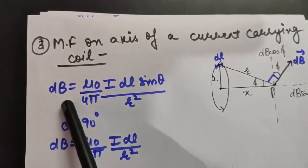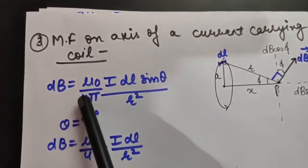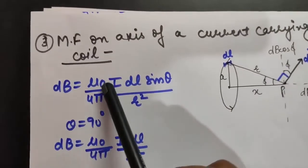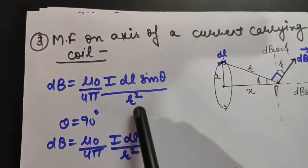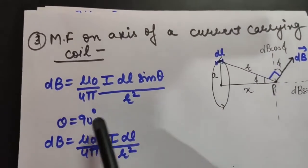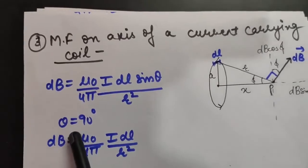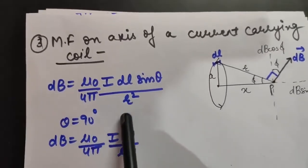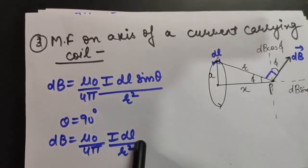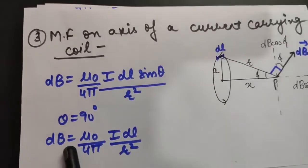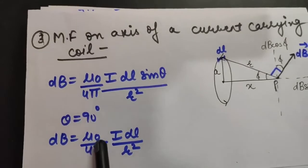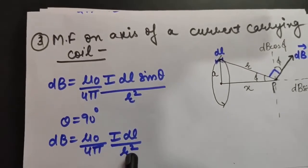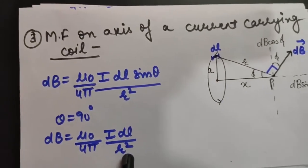If we apply Biot-Savart law: DB = (μ₀/4π) × (i × DL × sin θ) / R². Since θ is 90 degrees between DL and R, sin 90° = 1, so we get DB = (μ₀/4π) × (i × DL) / R².